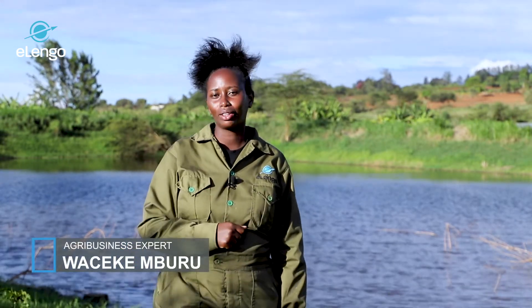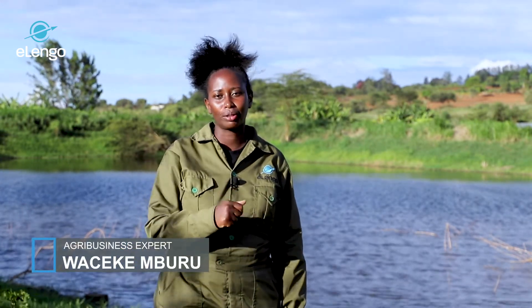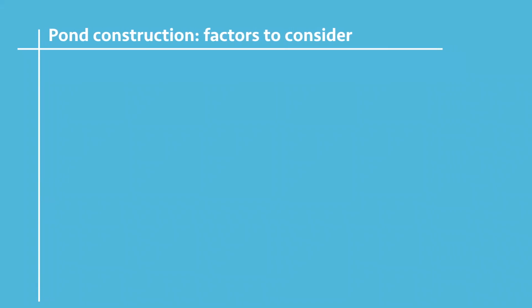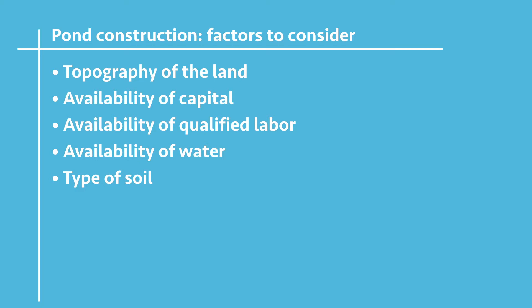Let us discuss the factors to consider when constructing a fish pond. We have topography of the land, availability of capital, availability of labor, availability of water, and the type of soil.